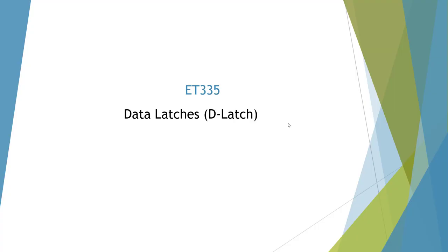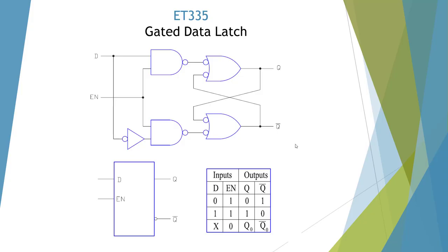Welcome to the ET335 presentation on data latches. Here I'm showing a gated data latch — we have this circuitry with an enable and data inputs. When it's enabled, the data will pass through to Q, and Q-not will be the opposite of Q. If we disable it by putting a low on the enable, the data gets latched. Its job is basically to latch data until we can get and use it.